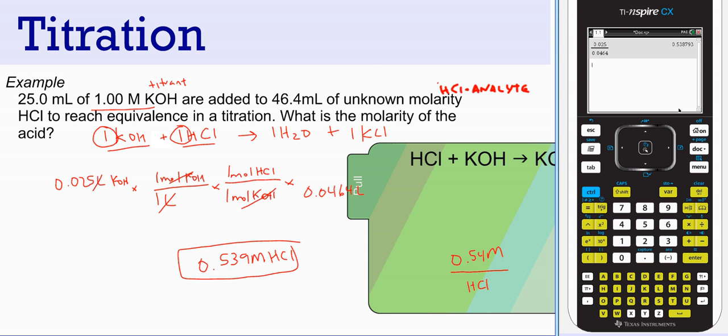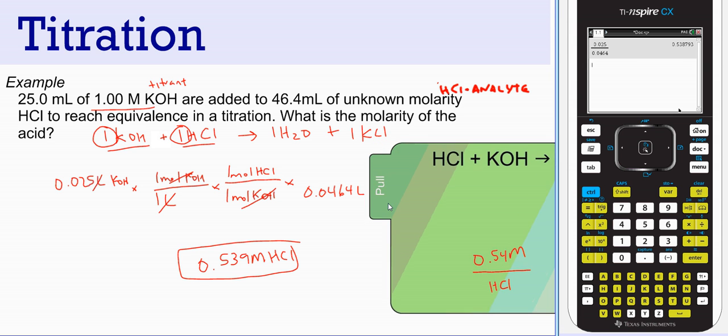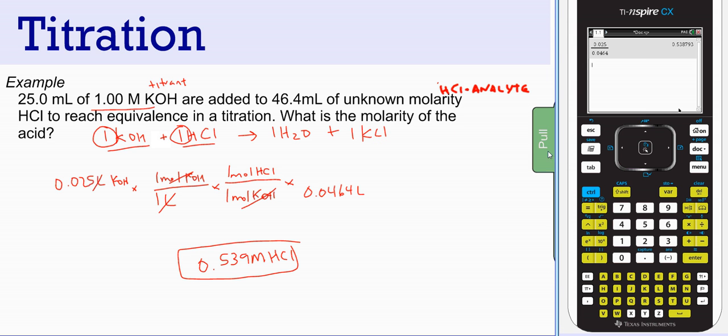So we just determined stoichiometrically the molarity of hydrochloric acid it took to reach this equivalence. Very challenging thing to do. In the lab, titrating is a challenge in itself. Once you get the values in the titration, then you can find that unknown.